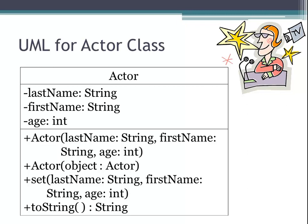Here's the UML diagram for our actor class. We have the variables string lastName, string firstName, and int age. We have an actor constructor that accepts a string lastName, string firstName, and int age. We have a second actor constructor that accepts an actor object. We also have a set method that accepts a lastName, firstName, and int, and initializes those variables. And we have a toString method that returns a string.